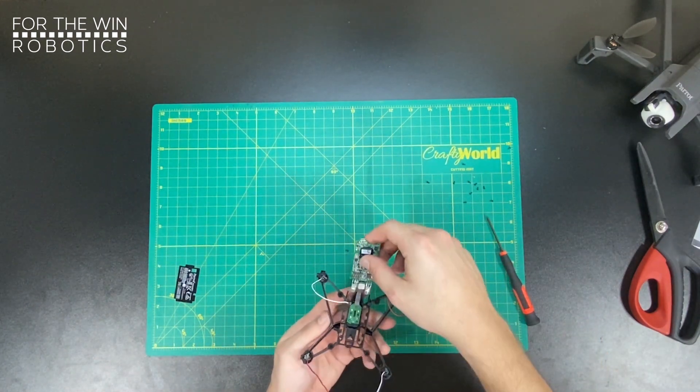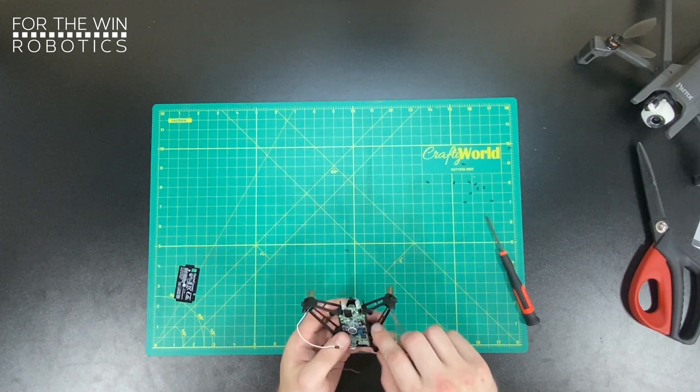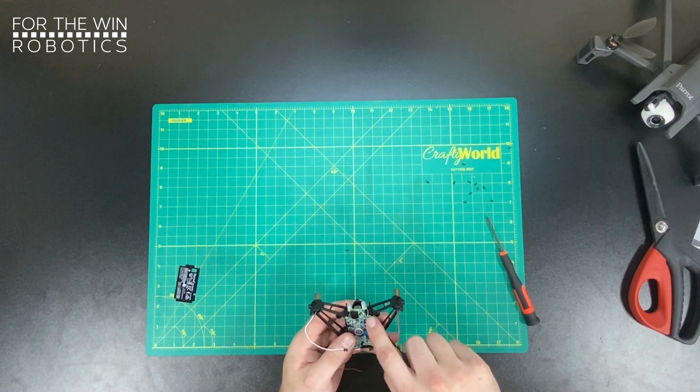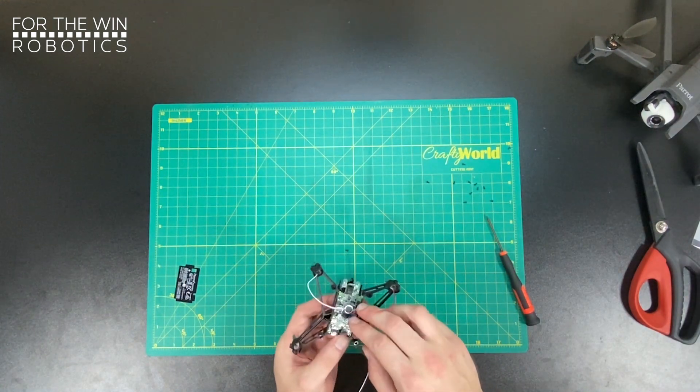So after you've screwed it in, you're going to fold the PCB back and these are four ports where you're going to eventually screw it into the frame of the drone. But we're not doing that yet until we assemble the cover.